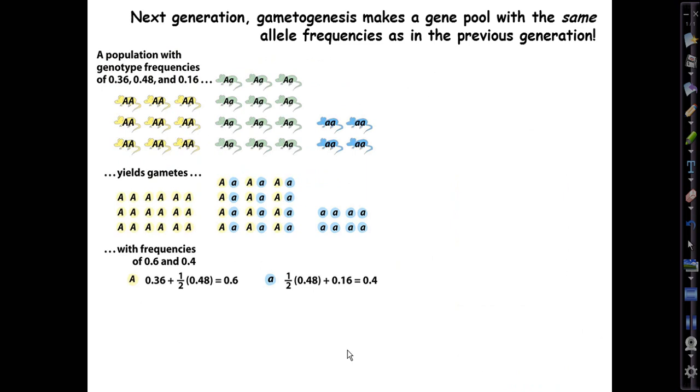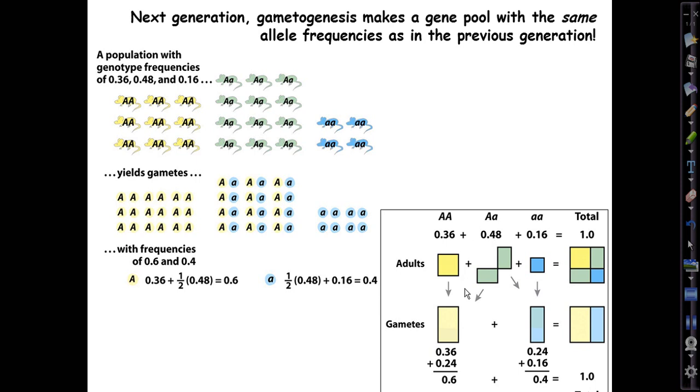Next generation, when the adults in those genotype frequencies make gametes, they are expected to produce a gene pool with the same allele frequencies as in the previous generation. And that's diagrammed here with the little mice themselves in proportion to their relative abundance. Nine of these homozygotes, big A big A, 12 of the big A little a heterozygotes, and four of the little a little a homozygotes, yielding these pools of gametes. And they end up having the same frequencies, 0.6 and 0.4. And so, we're right back where we started. And the allele frequencies have not changed as a result of just living in the world, growing up, making gametes, reproducing.